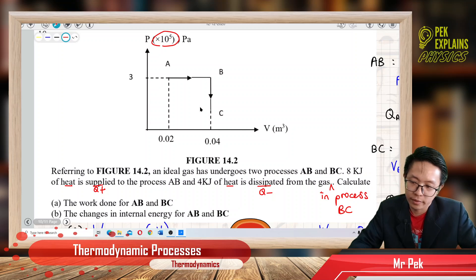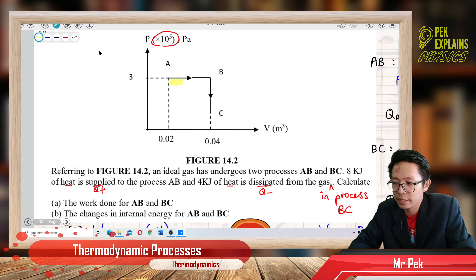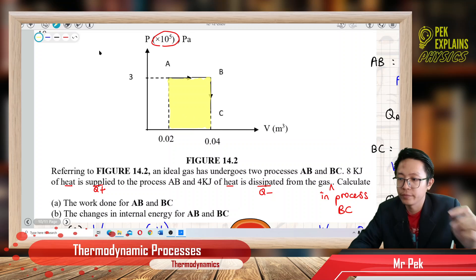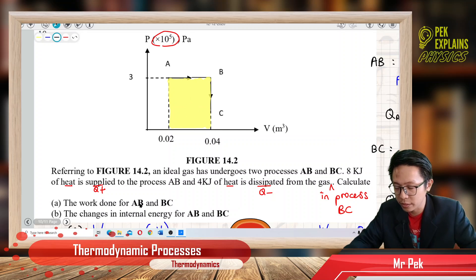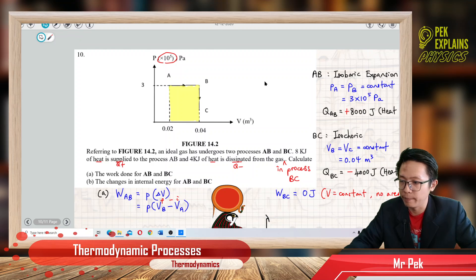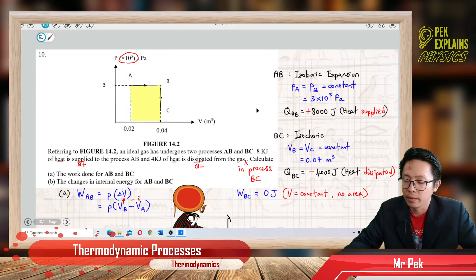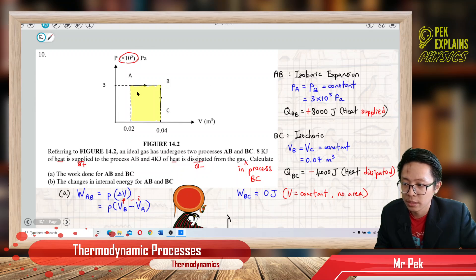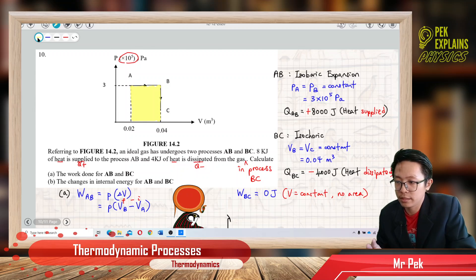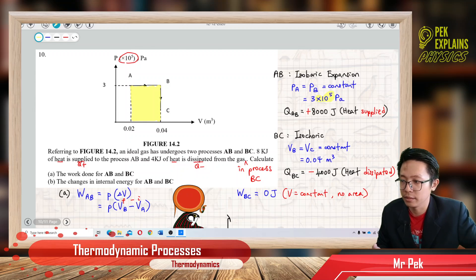Now, calculate the work done for AB. The work done for AB is the area under the graph. AB is an isobaric process, so the area under the graph is a rectangular shape. The pressure is constant at 3×10^5 Pascal. Don't miss out that exponent — exponent 5. Any student who misses out this important exponent will lose marks.